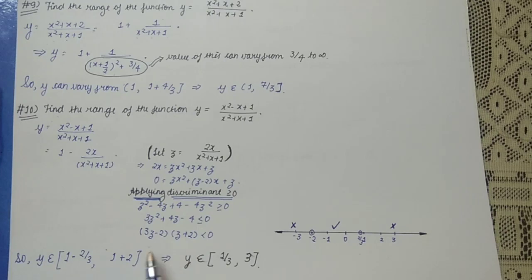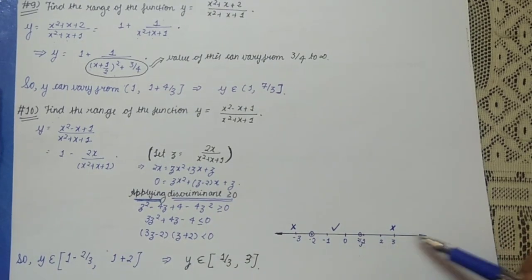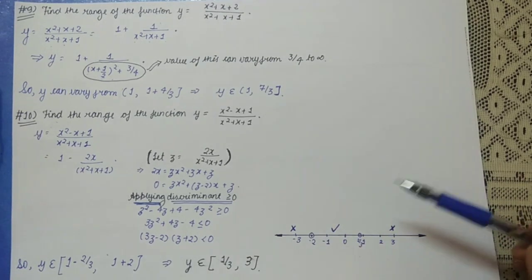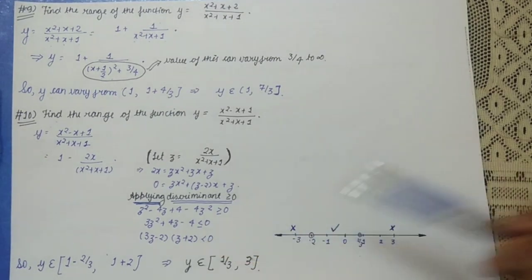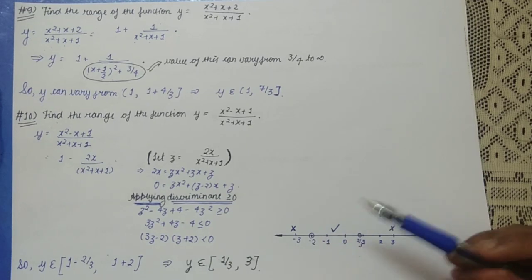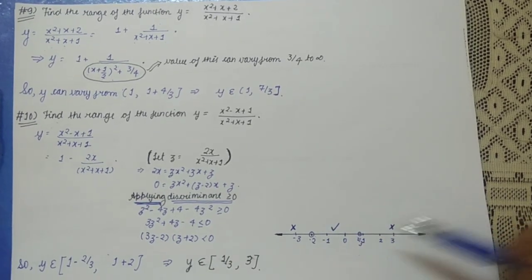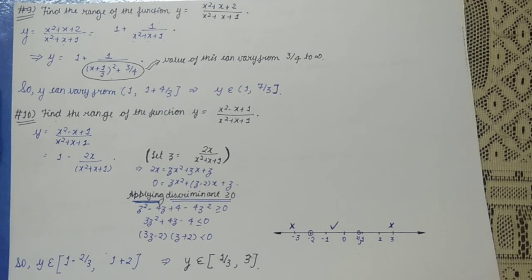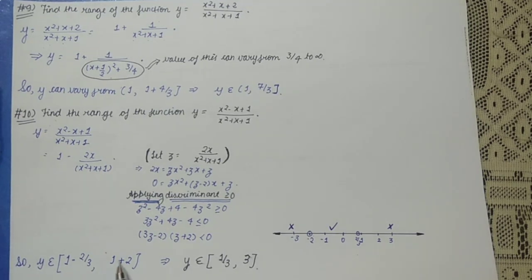Factorizing the discriminant condition gives (3z − 2)(z + 2) ≤ 0. On the real line the critical points are z = 2/3 and z = −2. Since this is a less-than-or-equal inequality, the range of z is [−2, 2/3]. Therefore y ranges from 1 − 2/3 = 1/3 to 1 − (−2) = 3. So y ∈ [1/3, 3].